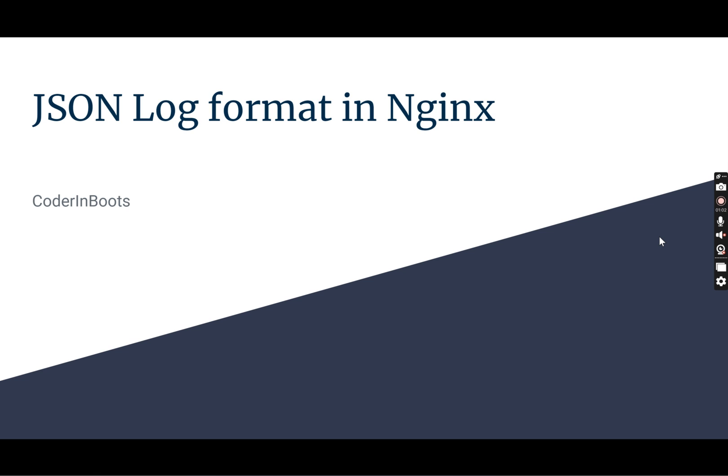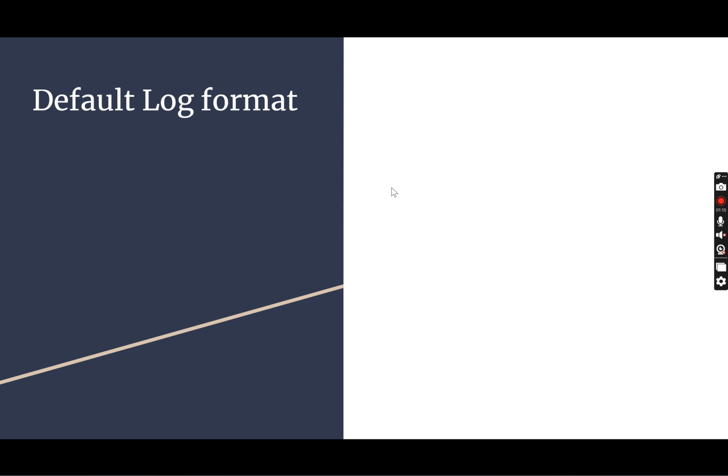We're going to discuss that here and show how to configure NGINX to write the logs in JSON format. So the default log format — the log files are written as text files in the /var/log/nginx folder on Linux machines.